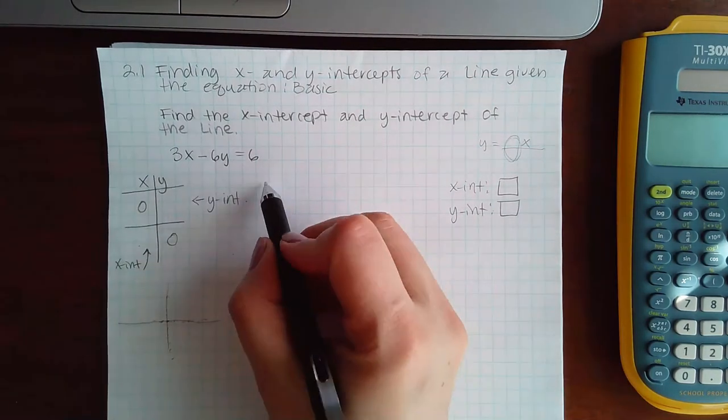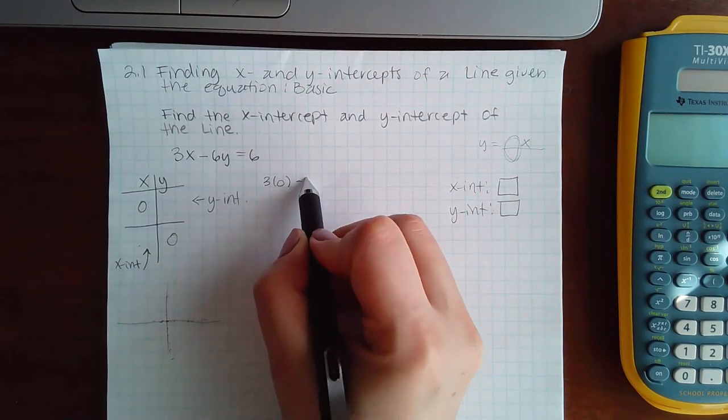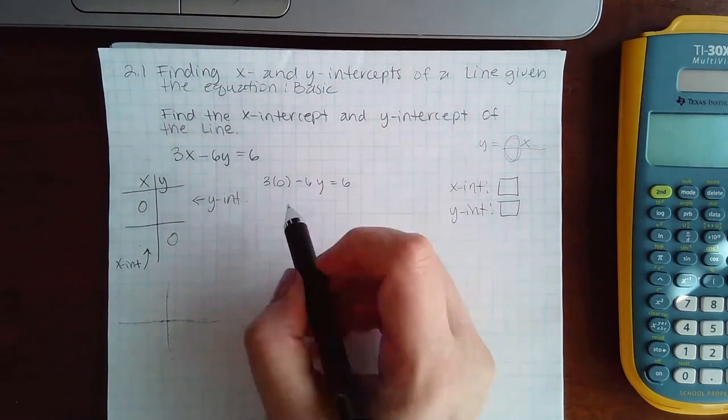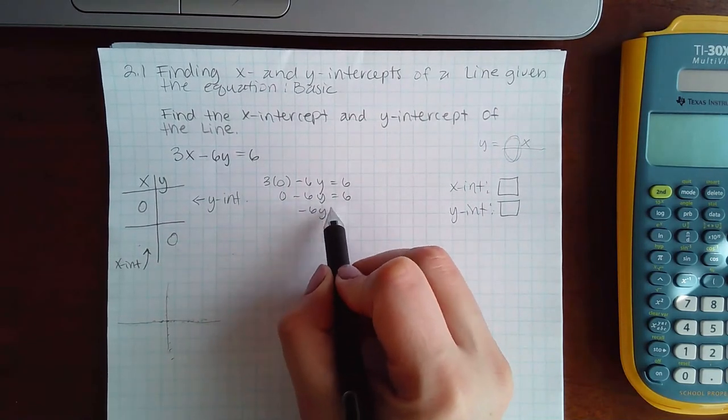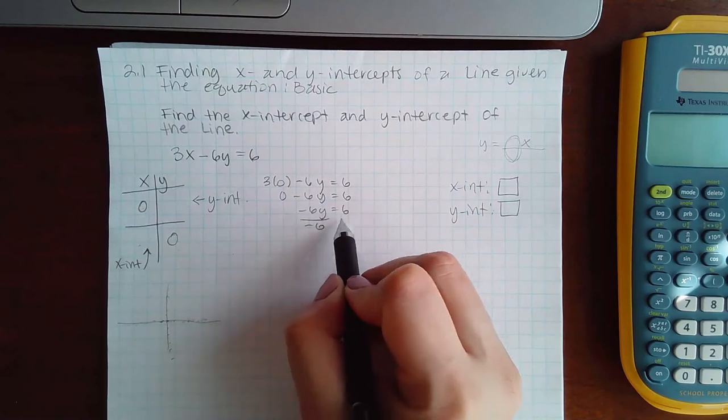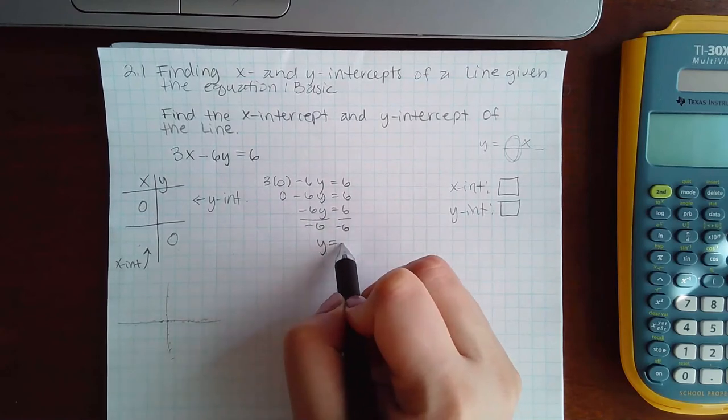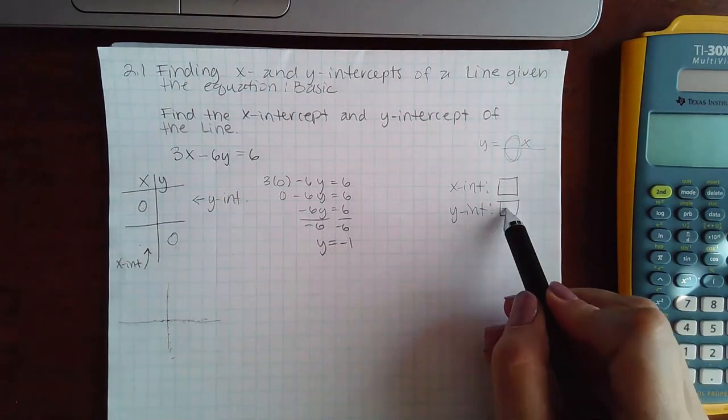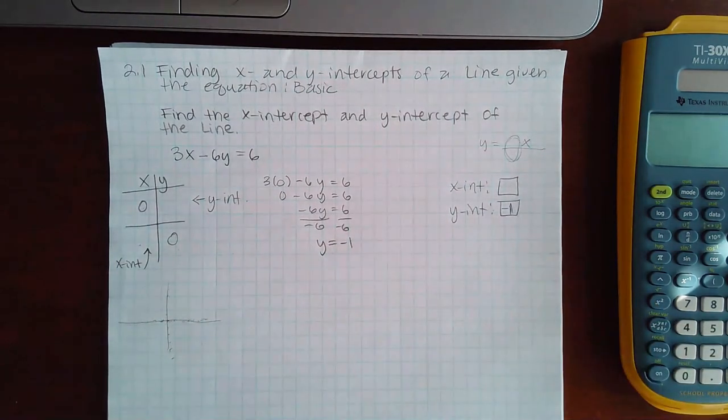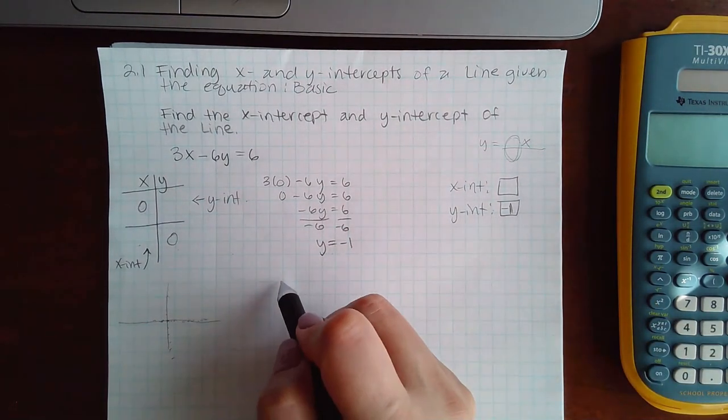The first thing I'm going to do is put zero for x. And I get zero minus 6y, or negative 6y equals 6. Divide by negative 6, get y equals negative 1. That is the y-intercept, so I now know what value goes here. Then I'm going to plug in zero for y.